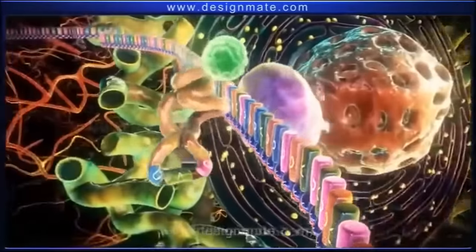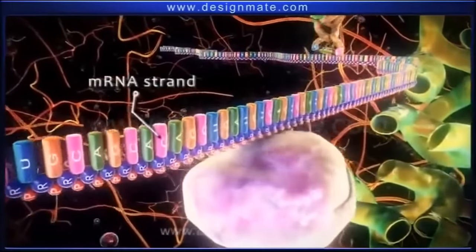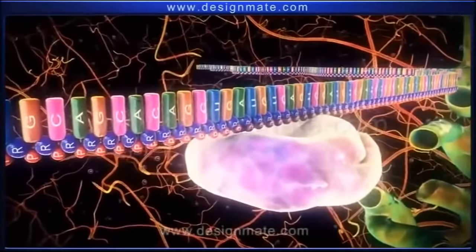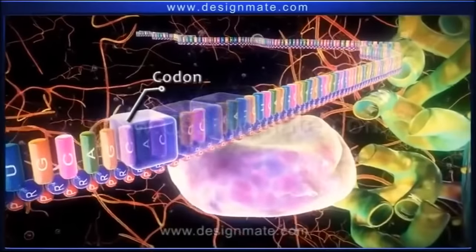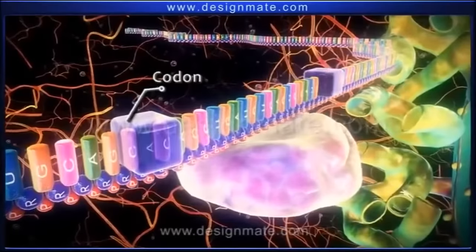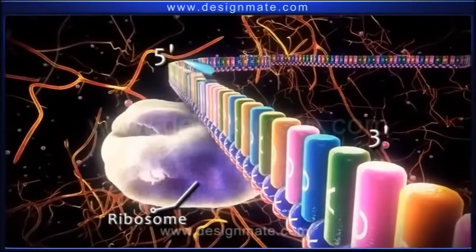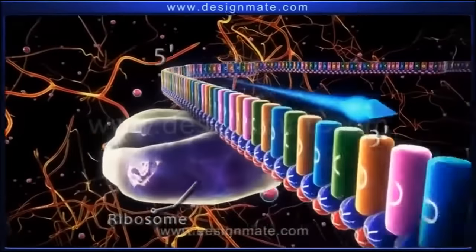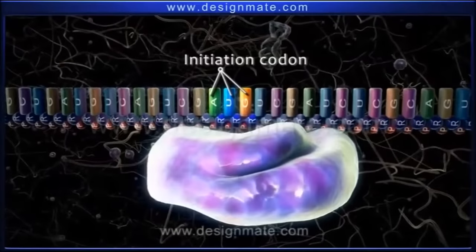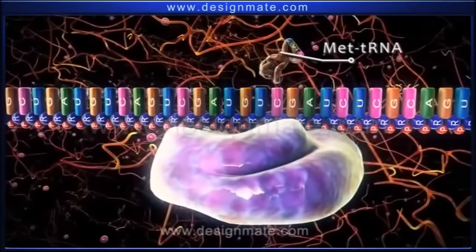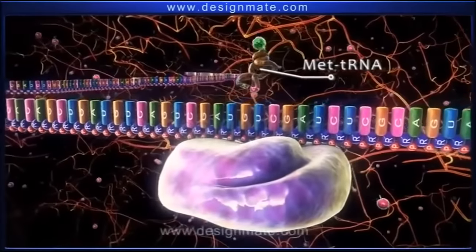During the initiation stage, a small subunit of a ribosome binds to the mRNA strand. The mRNA strand is made up of codons, which are sequences of three bases. The ribosome subunit moves along the mRNA in the 5' to 3' direction until it recognizes the AUG codon, or the initiation codon. At this point, met-tRNA possessing the anticodon UAC pairs up with the AUG codon of the mRNA.